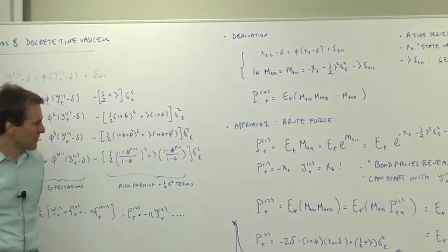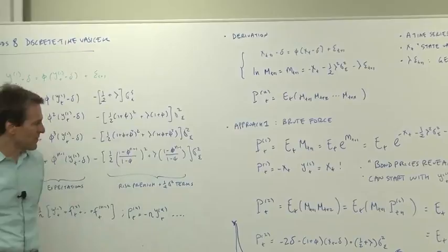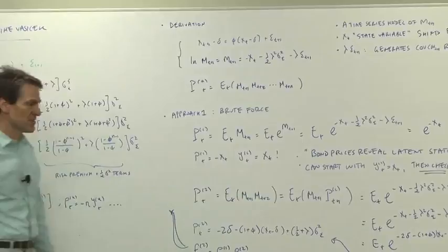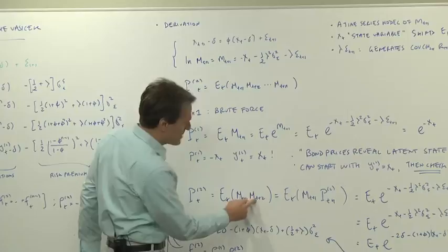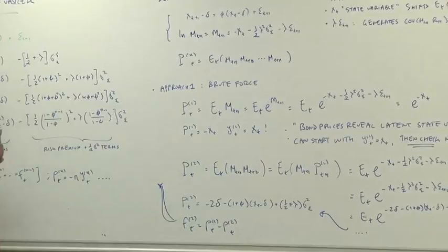Anyway, either way you go, we found our first bond price. Now let's go find our second bond price. So the second bond price is expected value of mt plus 1 times mt plus 2. This is going to get hairy if we're not careful, but e of m, et plus 1 of mt plus 2—that's tomorrow's one period bond price, so we can use that to make the algebra a little easier.